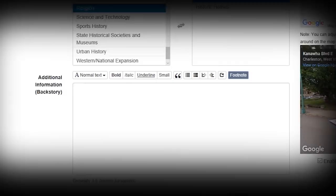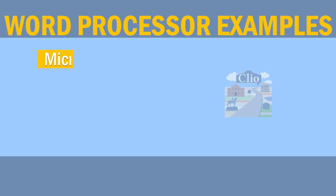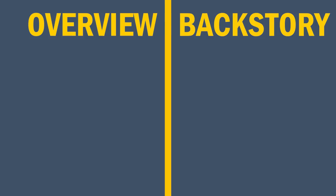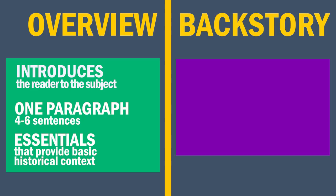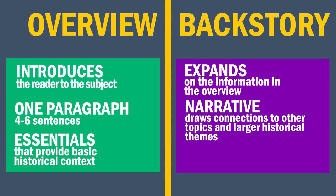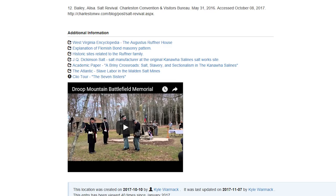A quick note before we get started: it's best to compose these sections using a word processor so that you can organize your research and edit your work. They might seem similar at first, but there are actually some important differences between the two sections. The overview is the first thing a user will read, and it should offer a thoughtful, one-paragraph introduction that includes the most essential information. The backstory is a place where you can provide more details, and although there is no limit to how much detail you can provide, we've heard from users that four to six paragraphs is usually the ideal length.